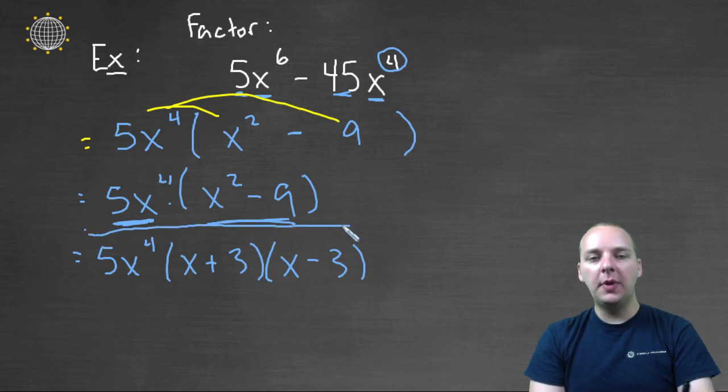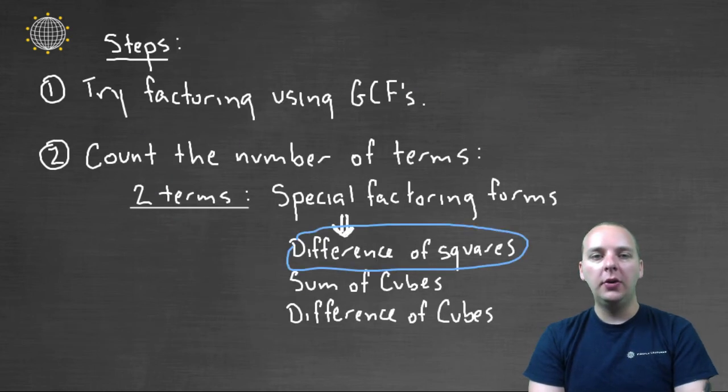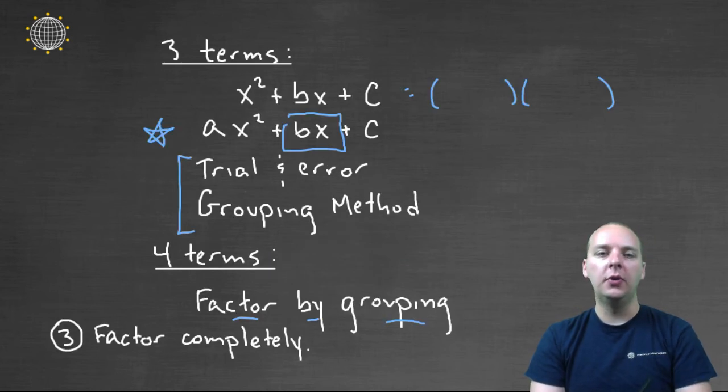So this would be my final answer, and so hopefully that illustrates this process in action here, where you factor using greatest common factors, then look at whether you have two terms, or three terms, or four terms, to know if you're factoring with special factoring forms.